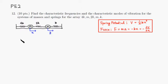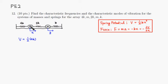Now we find the spring potential of the whole system. For the first spring, it's going to be one half times 4k — that's the spring constant — times x squared, since the displacement of that spring is just x.